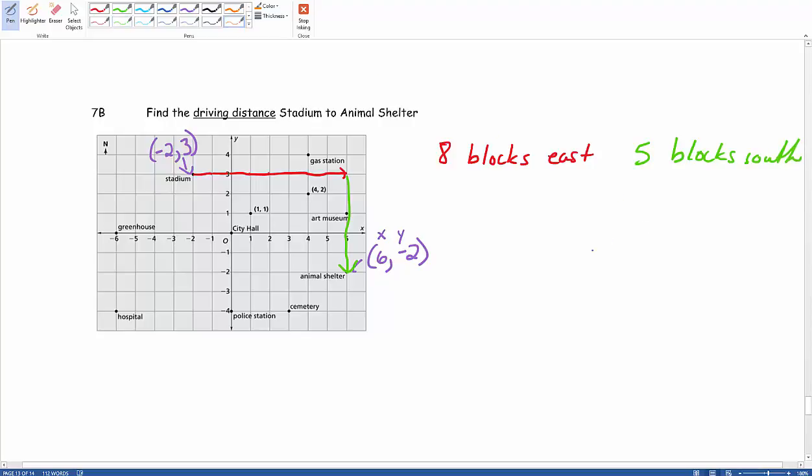And then this would give us a grand total of 13 blocks. So again though, this is our chapter 1, target 4, problem 7b.